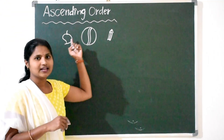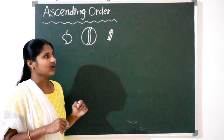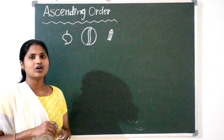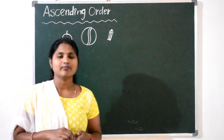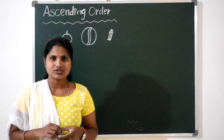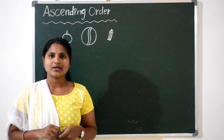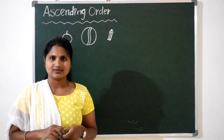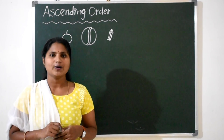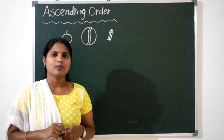Ascending Order. Ascending Order is nothing but we have to arrange the numbers from smallest to biggest.